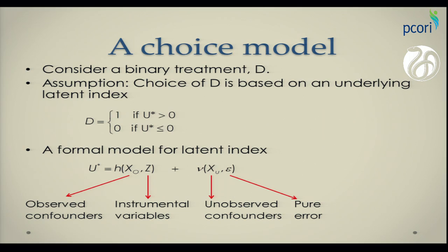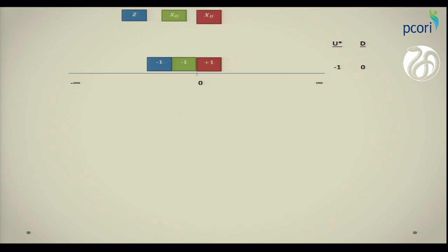Taking this as a basis for a choice model, we can see a lot about who's selecting to treatment and who does not select in treatment, and how identification of treatment effect happens when we are dealing with instrumental variable. To show this, let's examine a very stylized case. Here we have a line which represents U star, which is a real-scale line. It goes from minus infinity to infinity. And we have our observed confounders given by green, our instrument given by blue, and my unobserved confounders given by red. Suppose that the observed confounder XO contributes minus one units to that utility score, my instrument contributes another minus one, and my unobserved confounder contributes plus one. So if you add them up, we have U star minus one, and we would expect that people would not choose treatment because U star is negative.